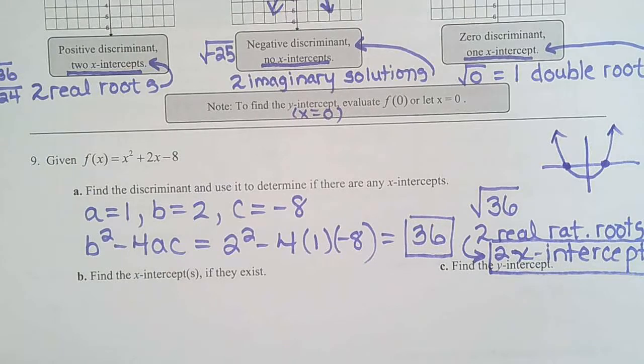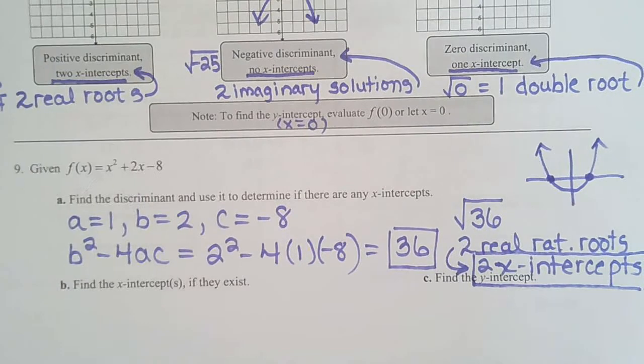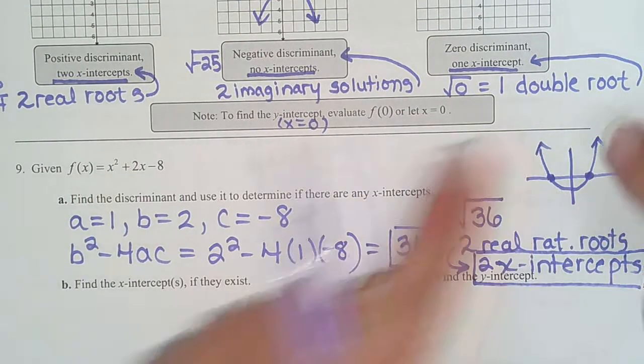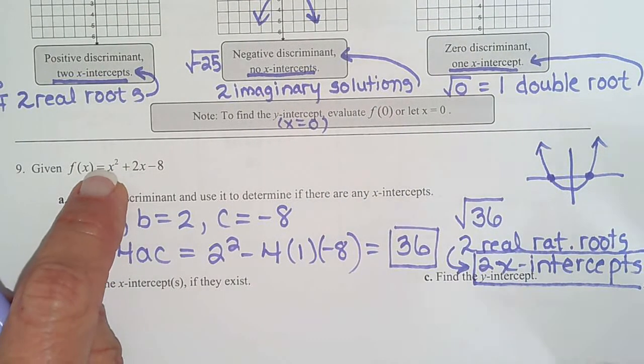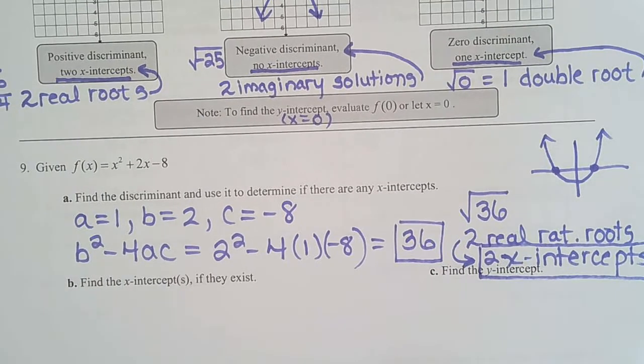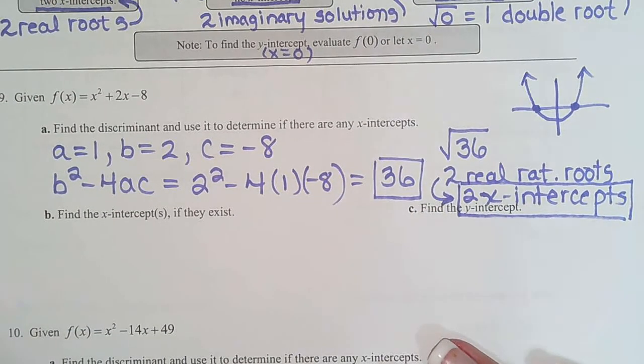And we know it cups up. I don't know if you remember this from at the very beginning of chapter 4, but if the leading coefficient is positive, it cups up. If the number in front of x² is negative, then it cups down. But this will still tell you the number of intercepts. So now it says, OK, you say there's 2 x-intercepts. Find them.